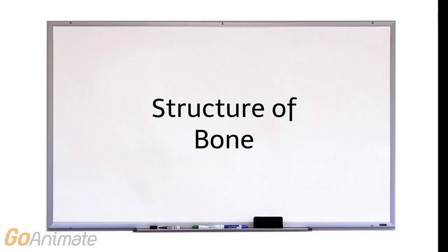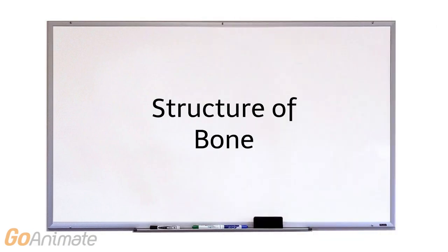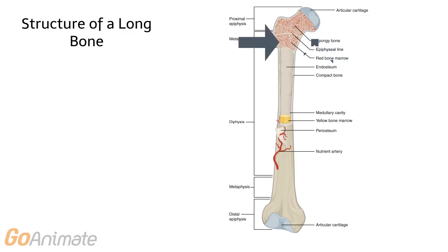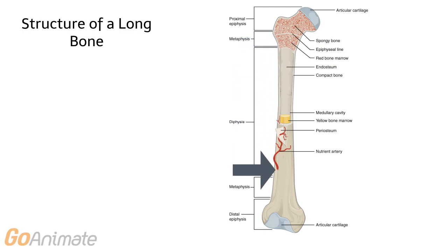Let's learn about the structure of bone, beginning with the structure of a long bone. Long bones include a proximal epiphysis and metaphysis. The long shaft of the bone is called the diaphysis. There is also a distal metaphysis and epiphysis.